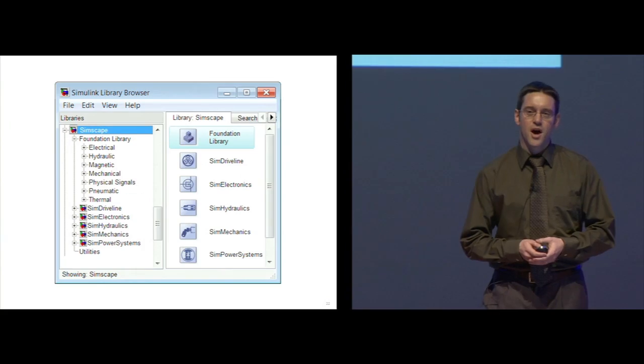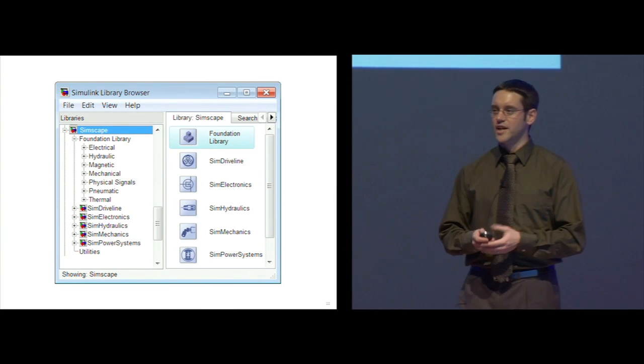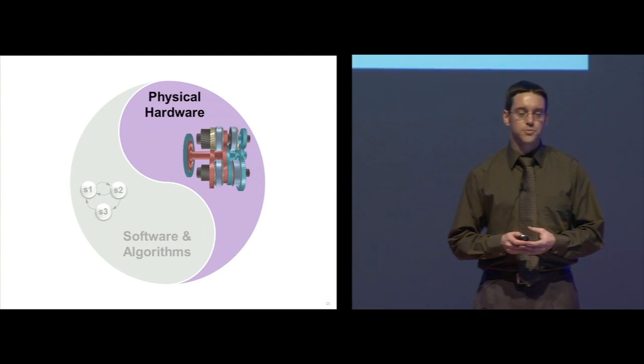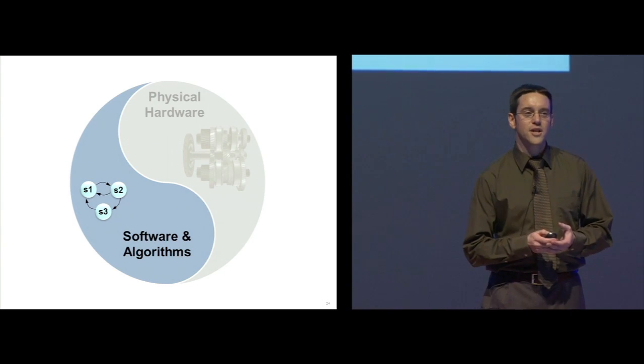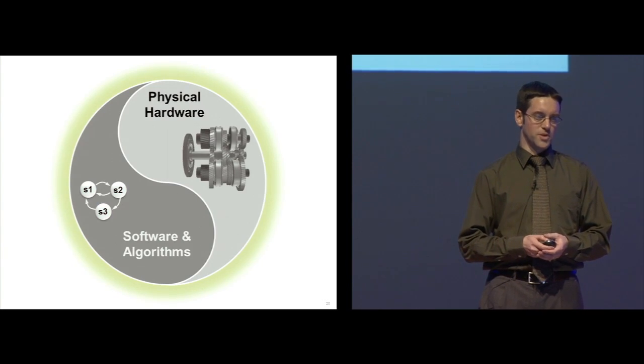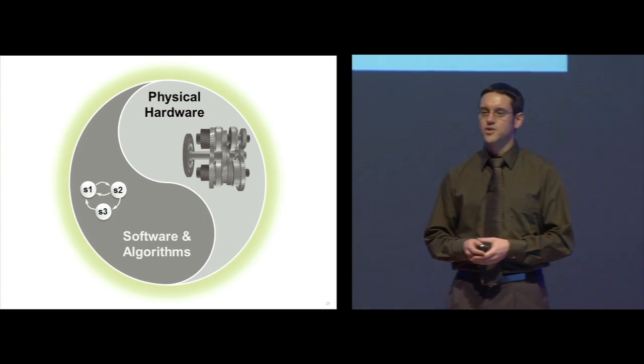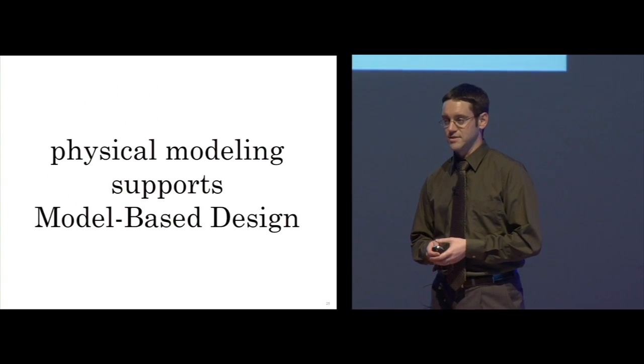I think this is a great description of a dual clutch transmission or any system with a controller. MathWorks physical modeling products are focused on the development of the plant model. And the plant model supports you as you develop software and control algorithms, as well as optimizing system level performance. This is how physical modeling supports model-based design.